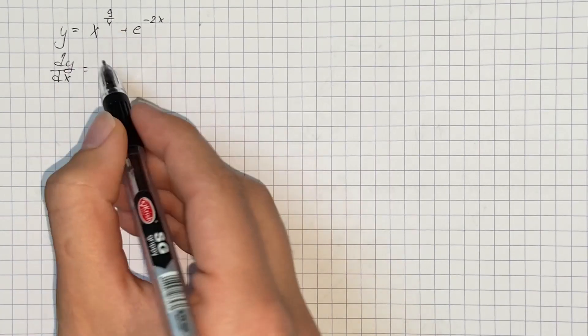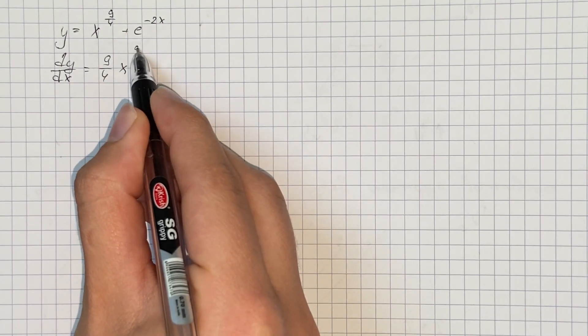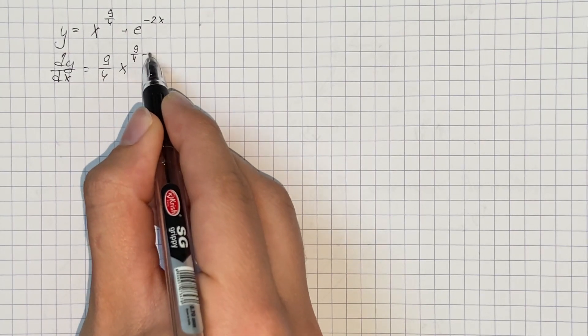And here we're going to use the power rule, so that's going to be 9 over 4 times x to the power of 9 over 4 minus 1.